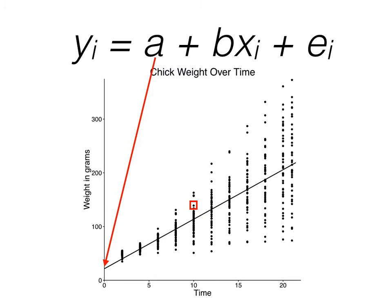Next, we can look at b, or our slope. This value tells us how much weight, on average, a baby chick gains for each day that passes.